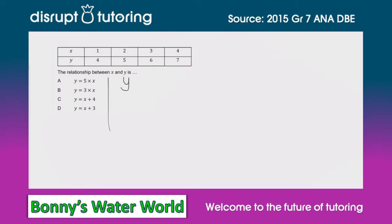So if x equals 1, we know that 5 times 1 equals 5. But the problem there is when x is 1, y should be 4. So we know that that can't be the right answer.